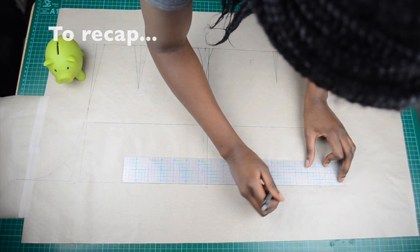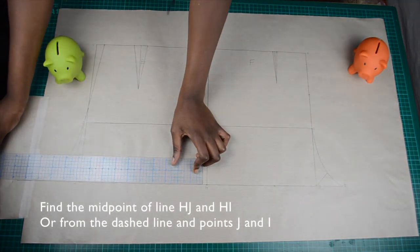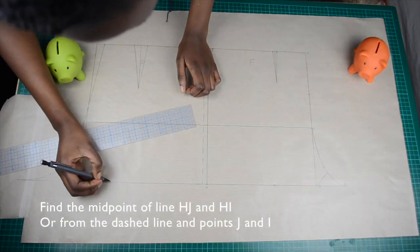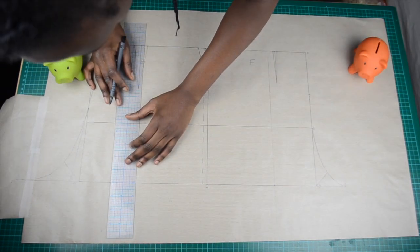Now we're going to find and mark the midpoint between points H to J and H to I, or from the new dash line to points J and I. From those midpoints, draw a perpendicular line upwards.